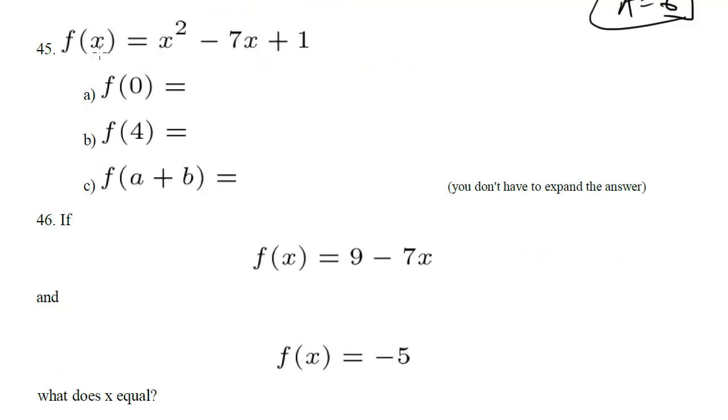Now moving into a little bit about functions, so we were given this function and we have to find these out. First f of 0, so go ahead and plug 0 in. We get 0 squared minus 0 plus 1 will be 1.